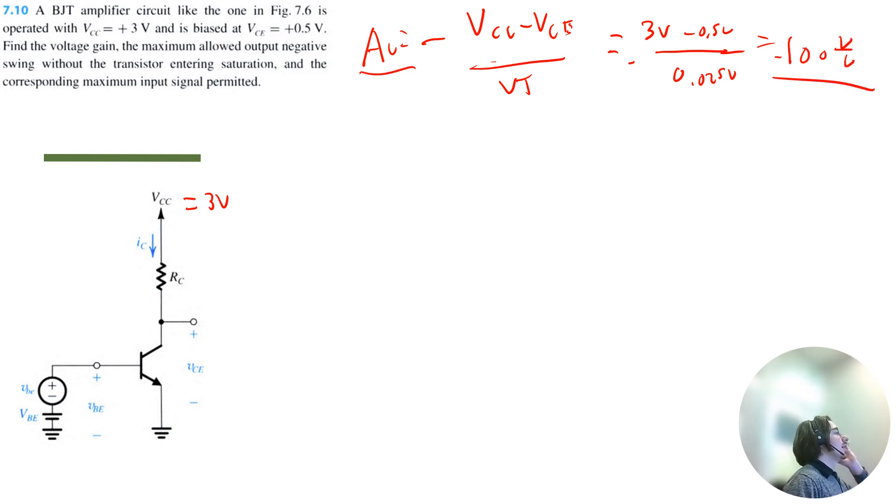Next, find the maximum allowed negative swing without the transistor entering saturation. For BJTs like this, the transistor will enter saturation when VCE is less than or equal to 0.3 volts.